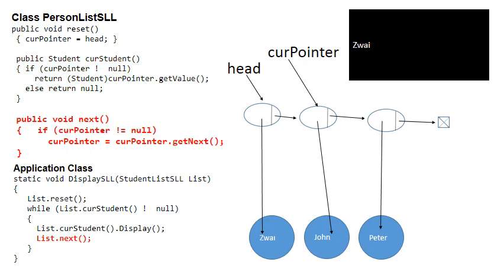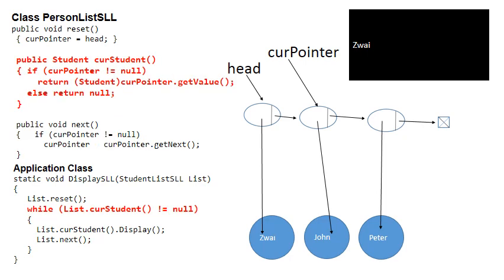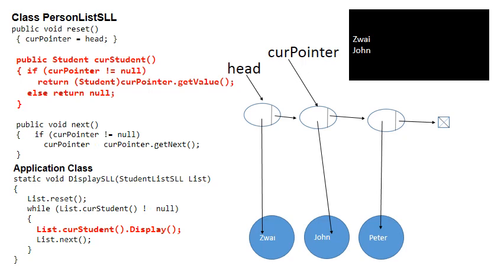When we say list.next, it moves currentPointer to the next node. We are back in the while loop — is currentStudent not null? Because currentPointer points to the second node, currentStudent will still not be null, so the condition is true. This command displays the current student linked to currentPointer, so John will be displayed.